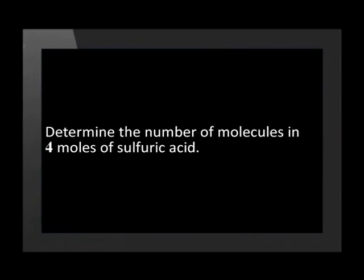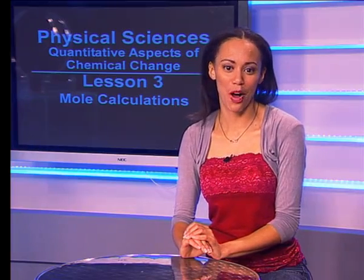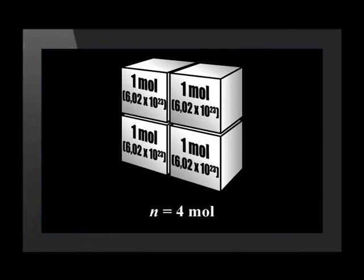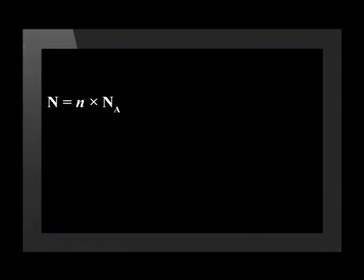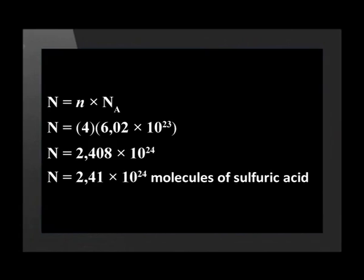Let's do an example together. Determine the number of molecules in 4 moles of sulfuric acid. This problem is easier if we imagine each mole as a separate box with 6.02 × 10²³ particles, so 4 moles will be 4 of these boxes. We write down the formula, substitute the values we know, and the calculator gives an answer of 2.408 × 10²⁴, which rounds to 2.41 × 10²⁴ molecules of sulfuric acid.